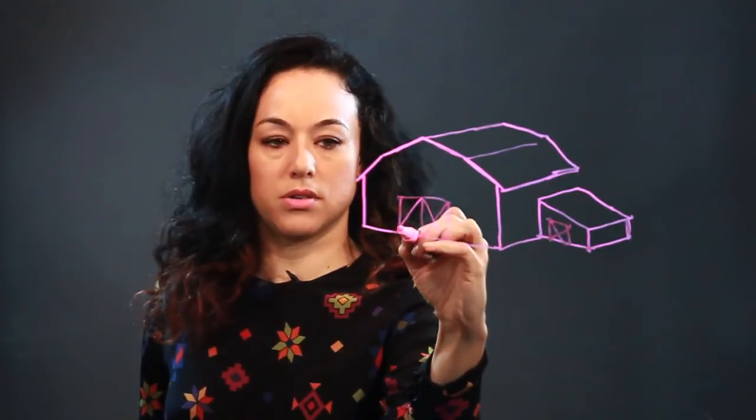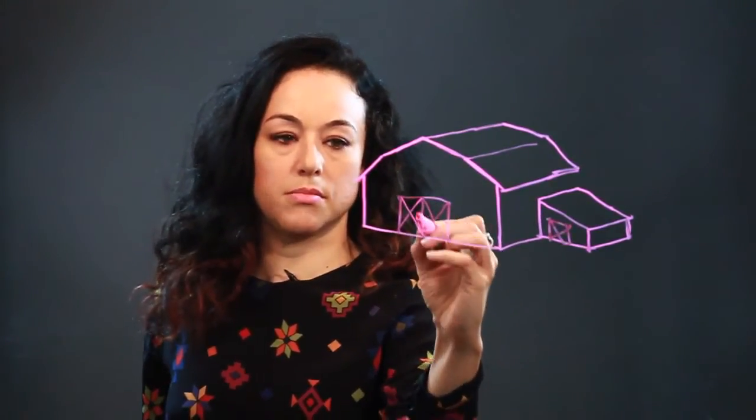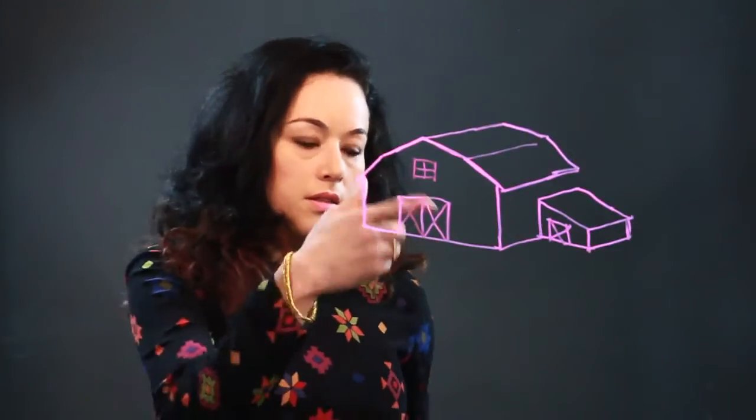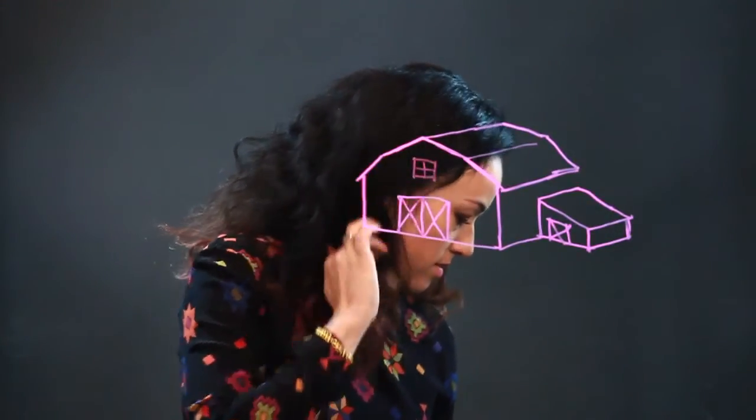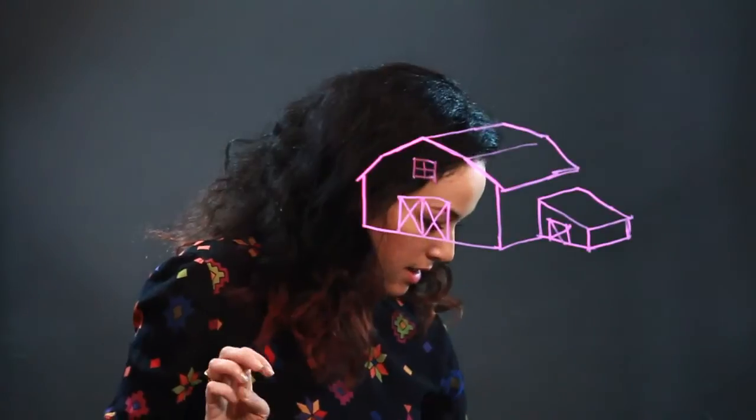And let's put a little door there. Then the barn has two barn doors. One thing you often see on barn doors is an X, so I'm putting those in. And there's a little window up here.